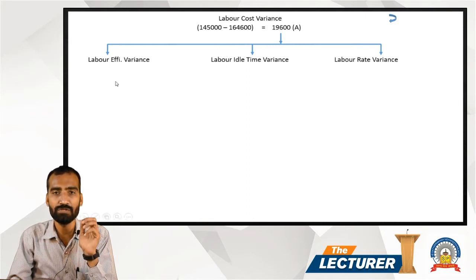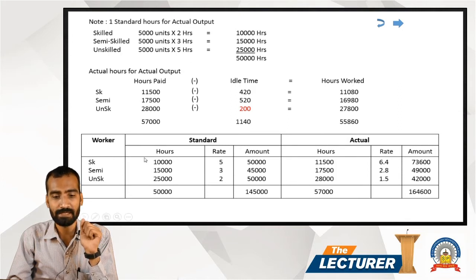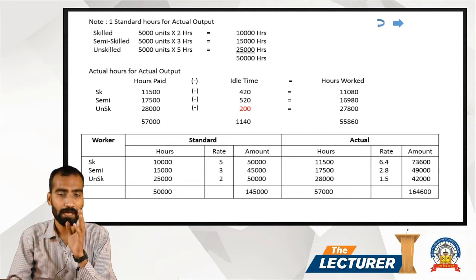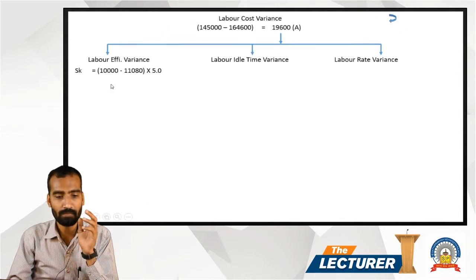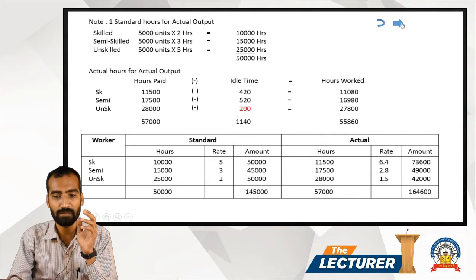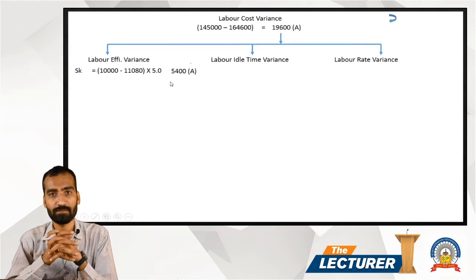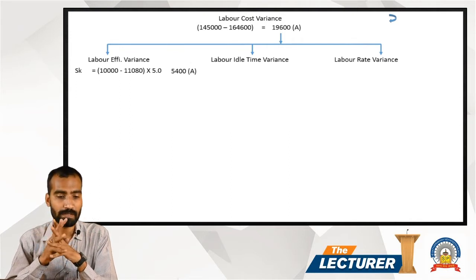Labor Efficiency Variance is calculated individually for each labor type using (Standard Hours − Actual Hours Worked) × Standard Rate. Skilled: (10,000 − 11,080) × 5 = 5,400 Adverse. The reason: standard required 10,000 hours but 11,080 hours were actually used — more time taken means adverse.